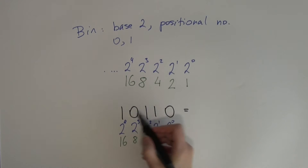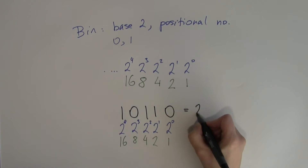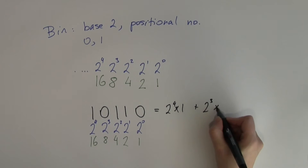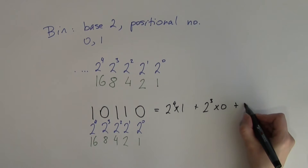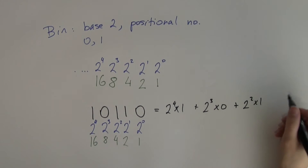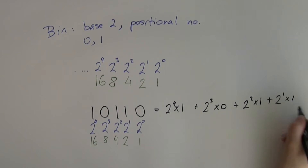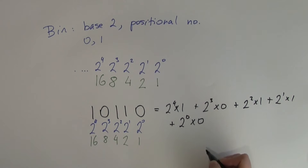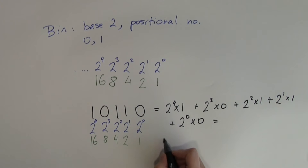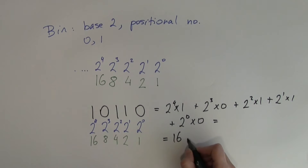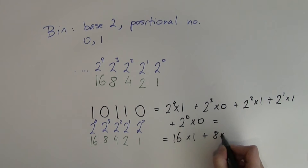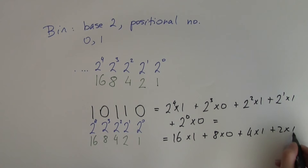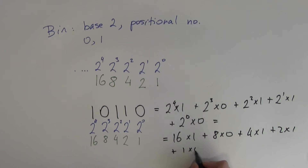That means we have 1 times 2 to the power of 4, plus 0 times 2 to the power of 3, plus 1 times 2 to the power of 2, plus 1 times 2 to the power of 1, plus 0 times 2 to the power of 0. This also means we have 16 times 1, plus 8 times 0, plus 4 times 1, plus 2 times 1, plus 1 times 0.